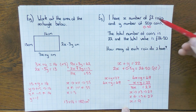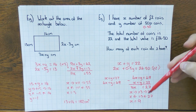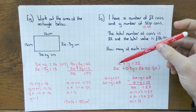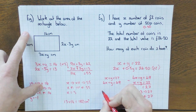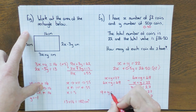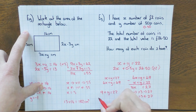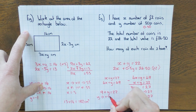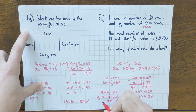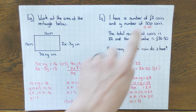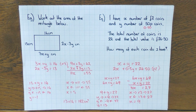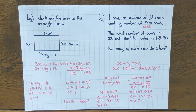Substitute x back in using x plus y equals 22: 9 plus y equals 22. Using the flowchart: 22 minus 9 gives y equals 13. So I have 13 fifty-pence coins and 9 two-pound coins. That's how you solve that one.